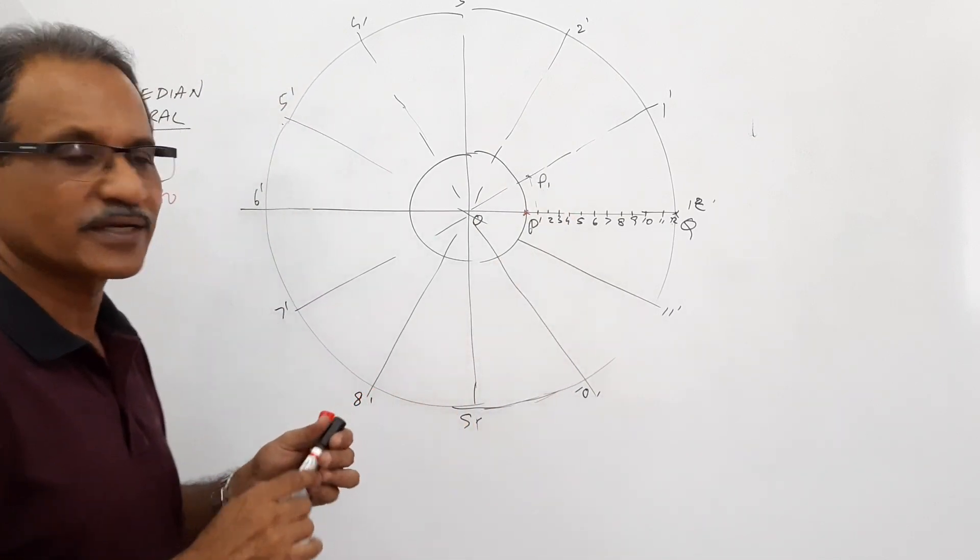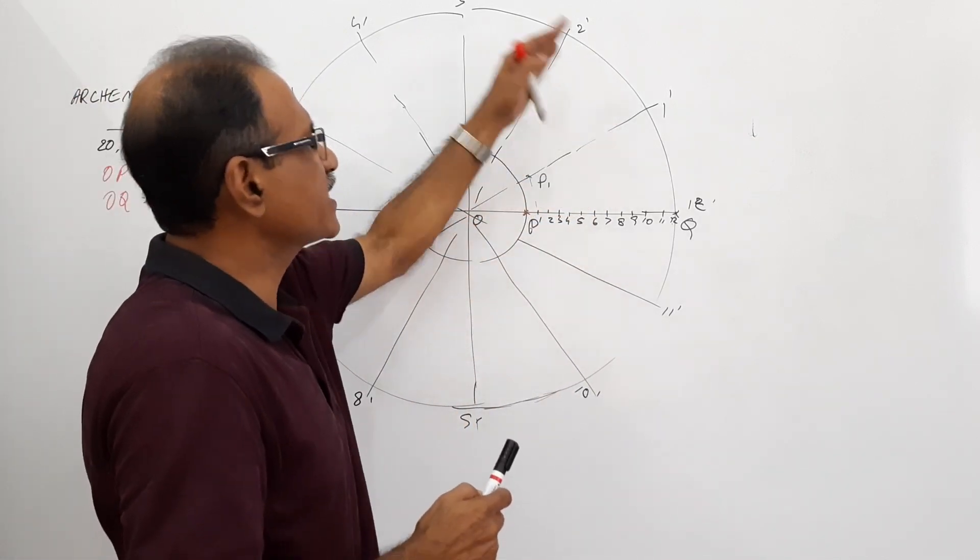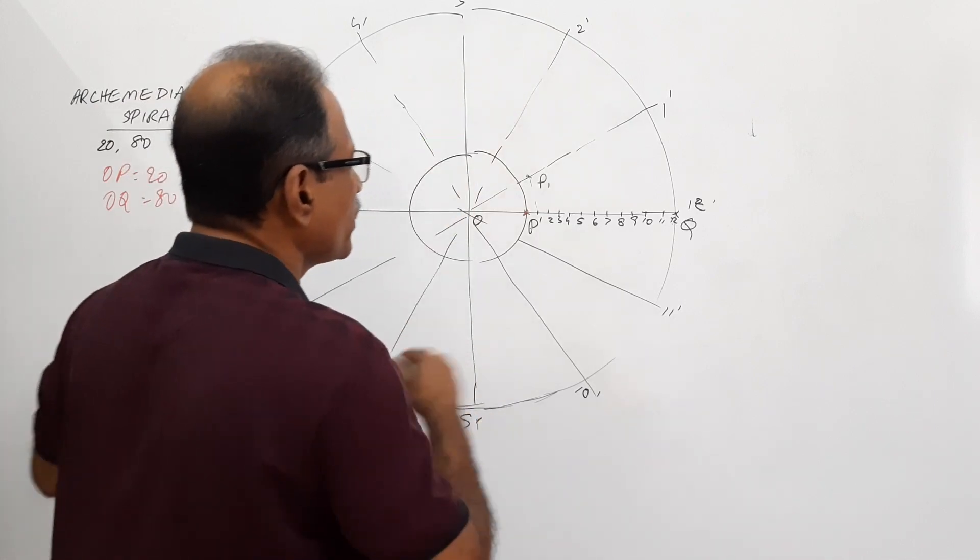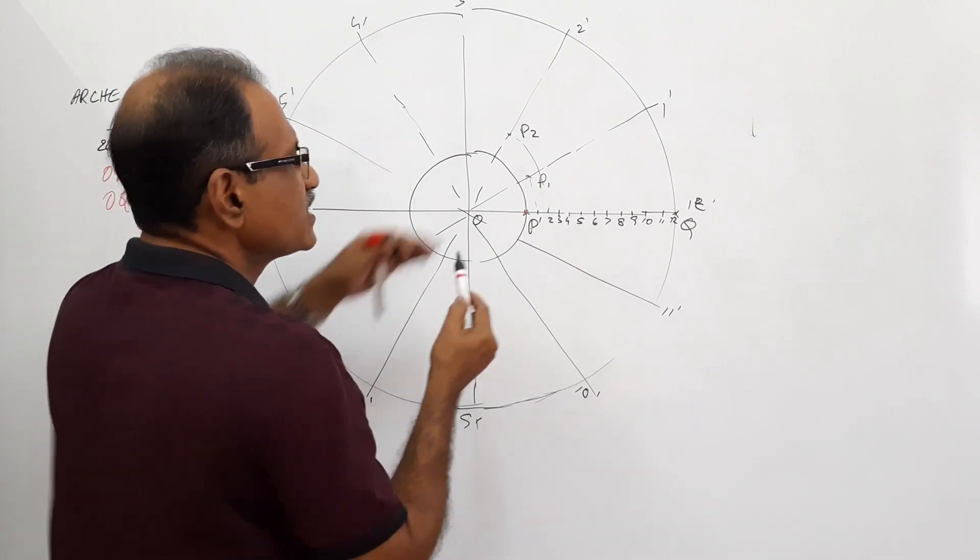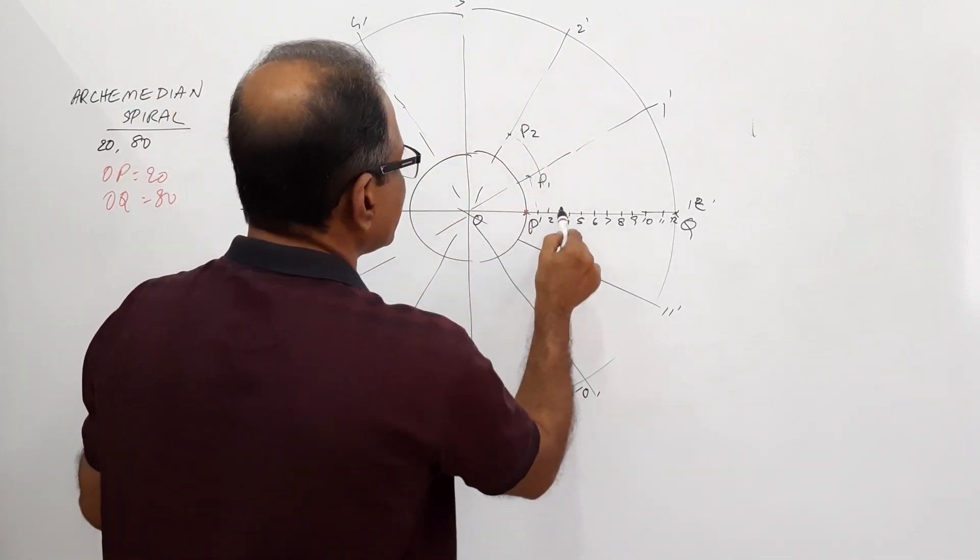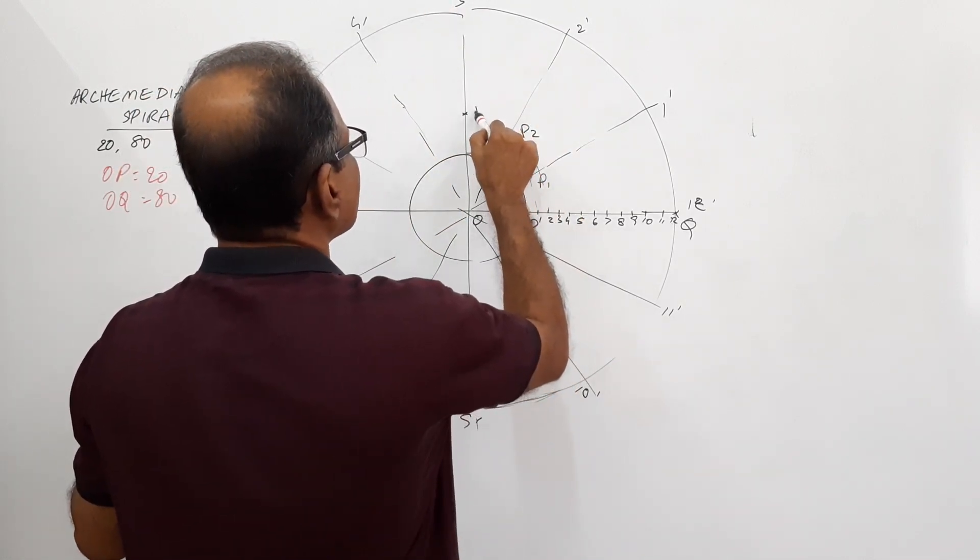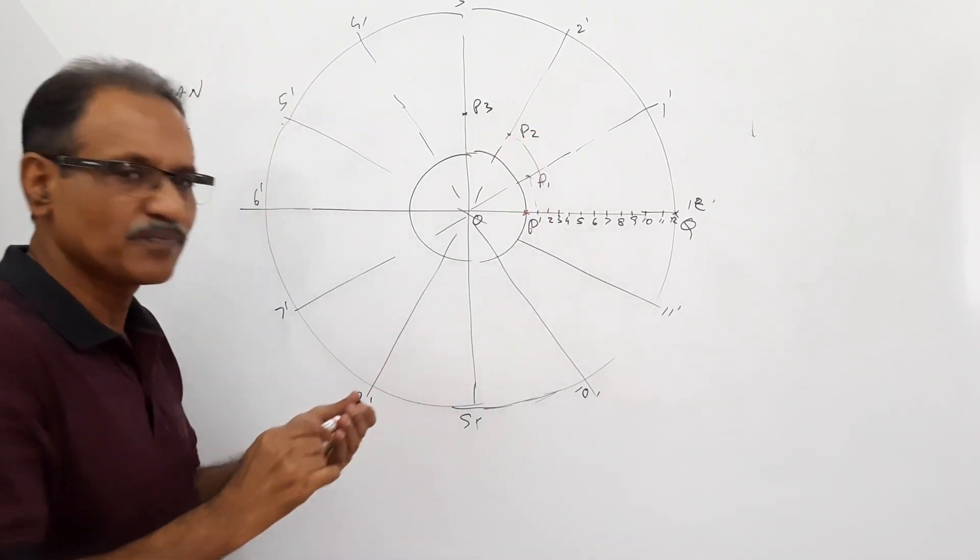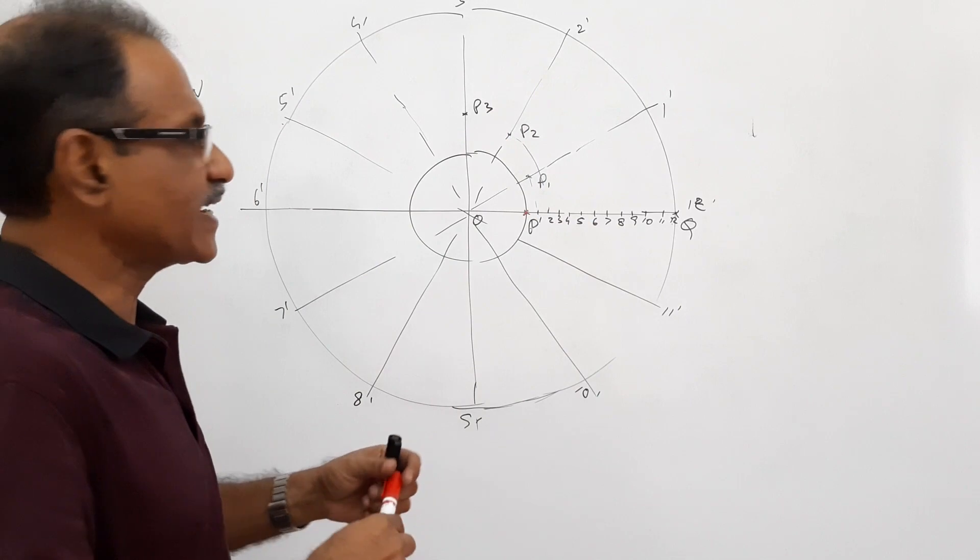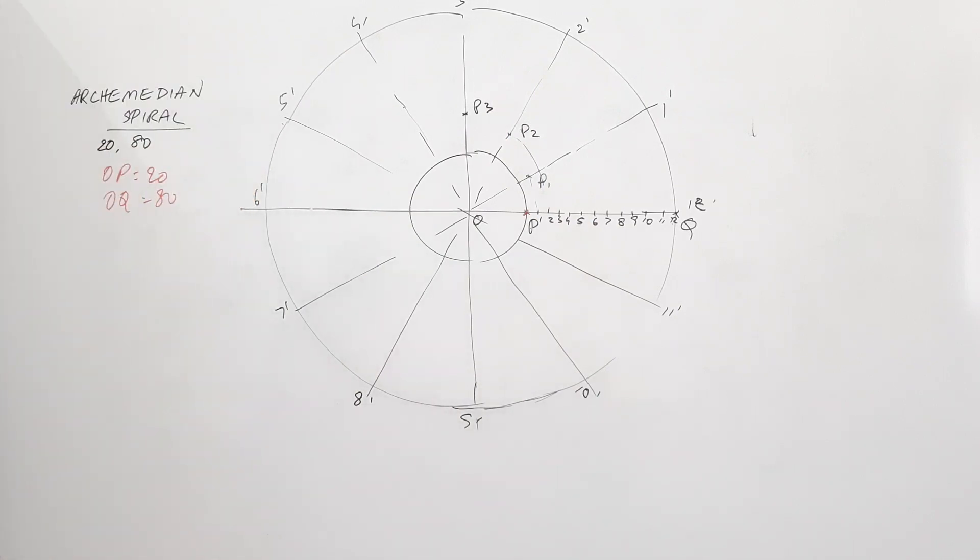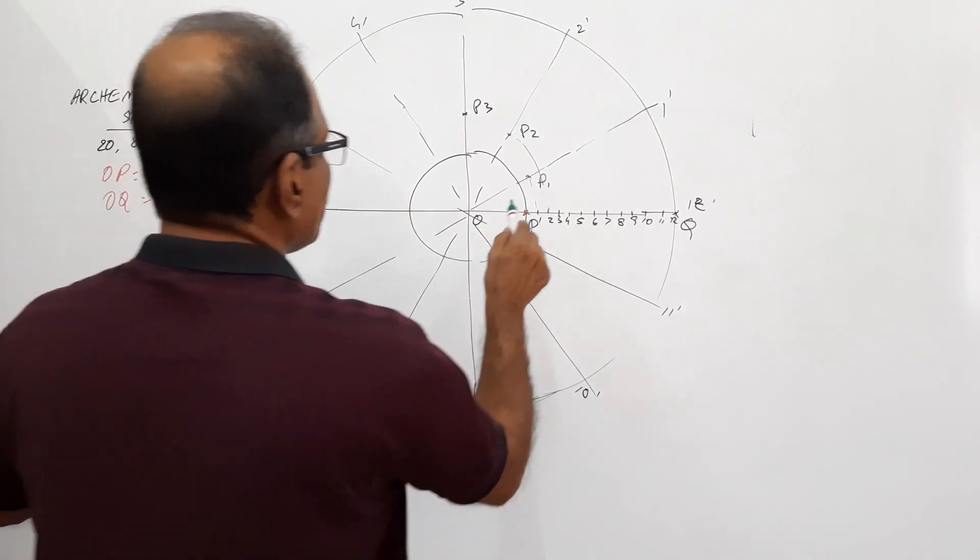When it further rotates and comes to O2 dash, where is the moving point? O as center, O2 as radius, draw an arc. This is P2. Similarly, when it reaches this position, O as center, O3 as radius, draw an arc. You get P3. Similarly, locate all other points on those radial lines and connect them by a smooth curve. What you get is called an Archimedean spiral.